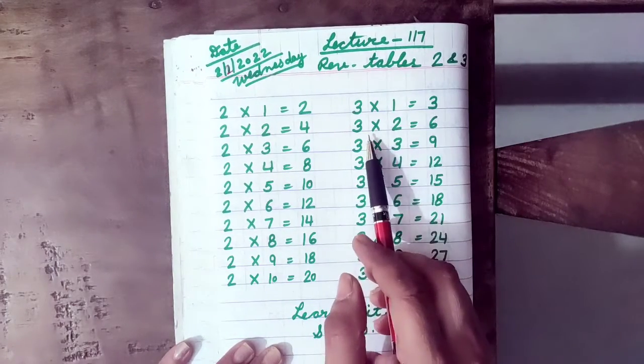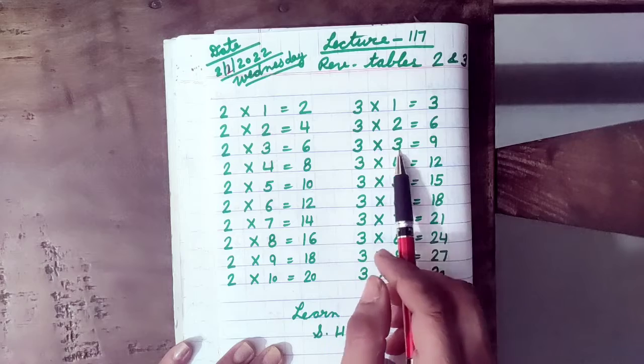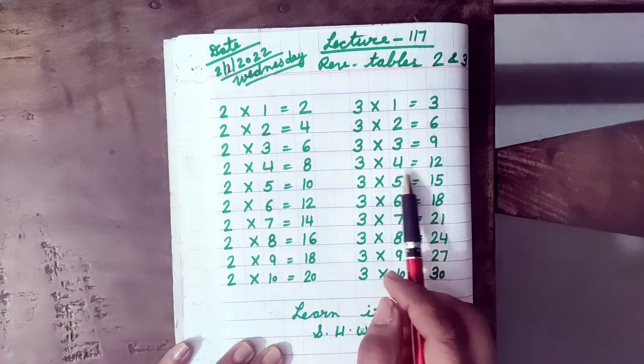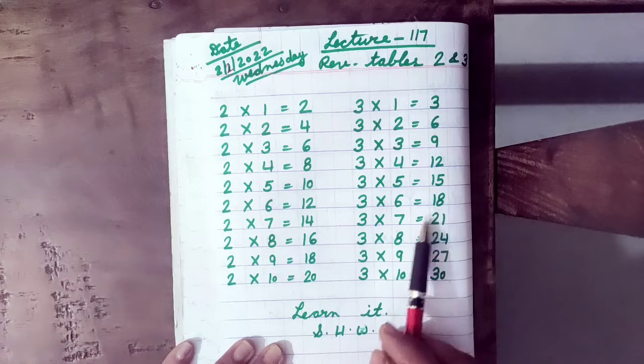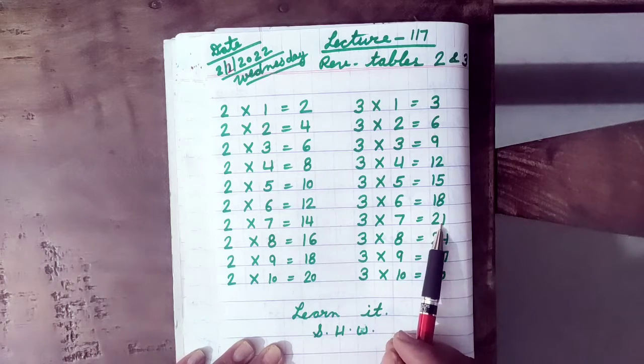3 ones are 3, 3 fives are 15, 3 sixes are 18, 3 sevens are 21.